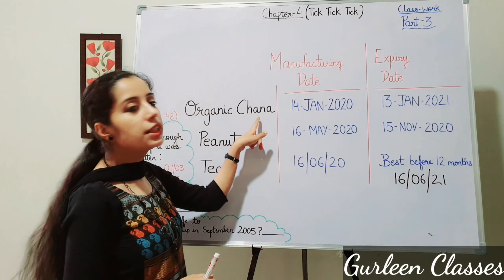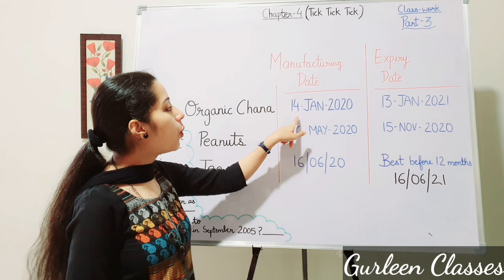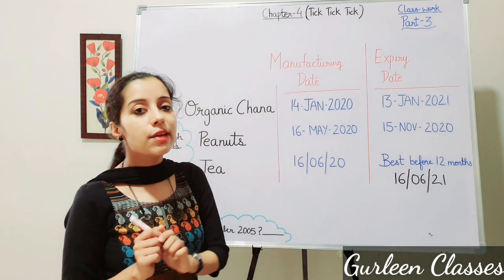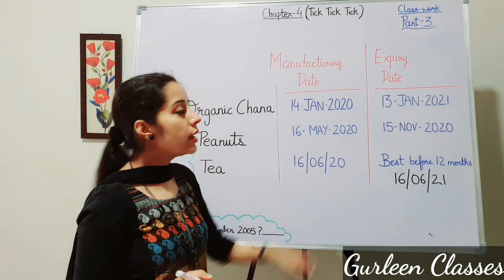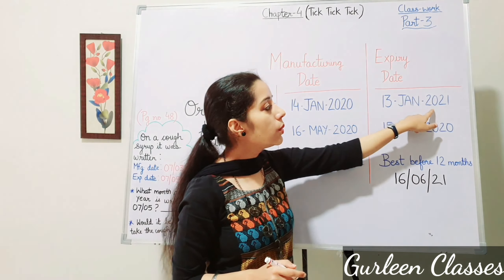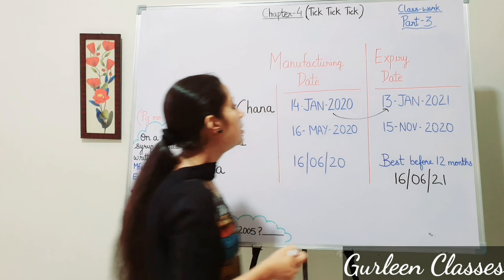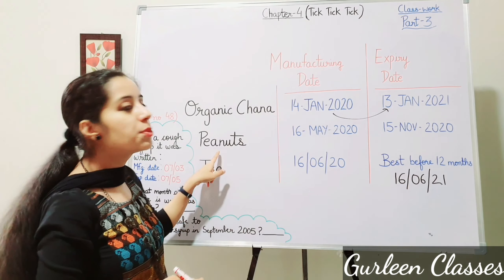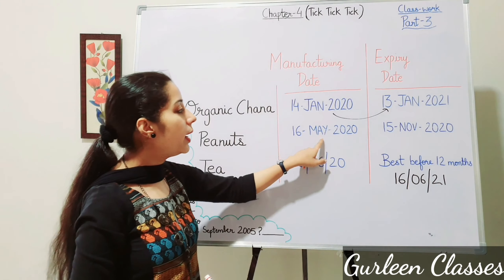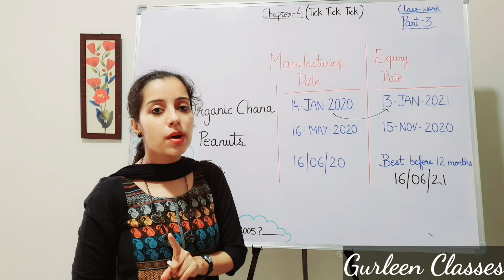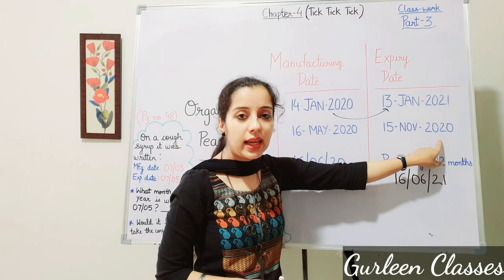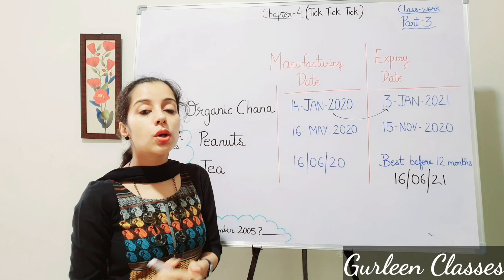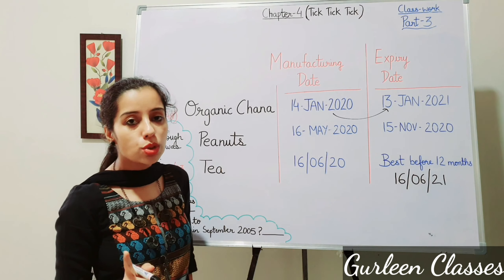First item: organic chana — manufacturing date 14th January 2020, expiry date 13th January 2021. The month is the same, but the year changes from 2020 to 2021, so it can be used for around one year. Second item: peanuts — manufacturing date 16th May 2020, expiry date 15th November 2020. From May to November is six months, so peanuts can be used for six months.